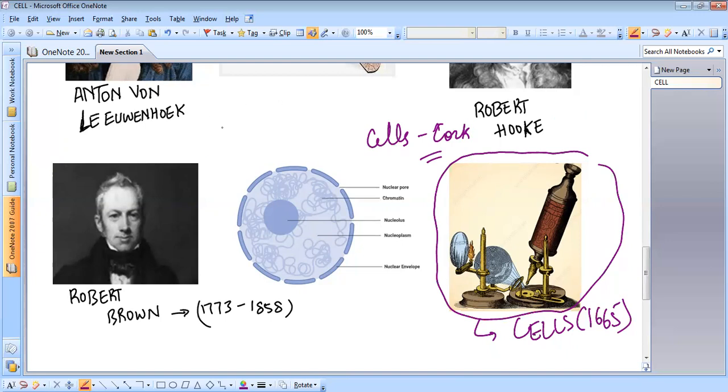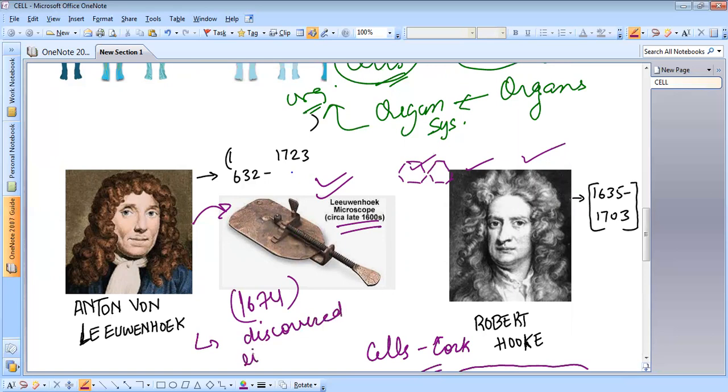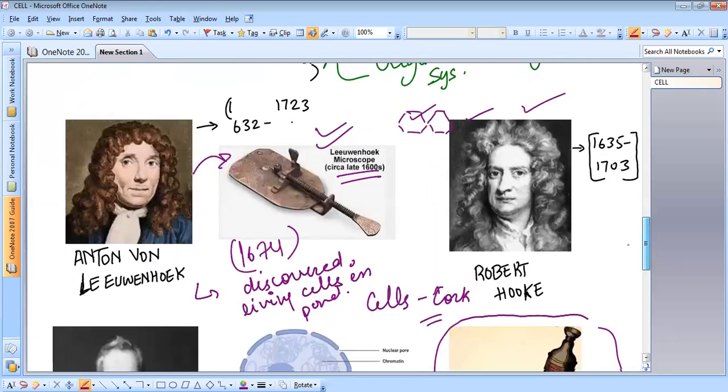Next, there comes another man named Anton van Leeuwenhoek. In 1674, Anton van Leeuwenhoek, a Dutch microscopist, made an improved microscope. Using this microscope, he discovered the free living cells in pond water for the first time. This is the Leeuwenhoek microscope, which was created by Anton van Leeuwenhoek. An improved microscope, improved version of Robert Hooke's microscope. And here, this Dutch scientist found free living cells in pond water. And he did this discovery in 1674. He discovered living cells in pond water. So this was the improved microscope.